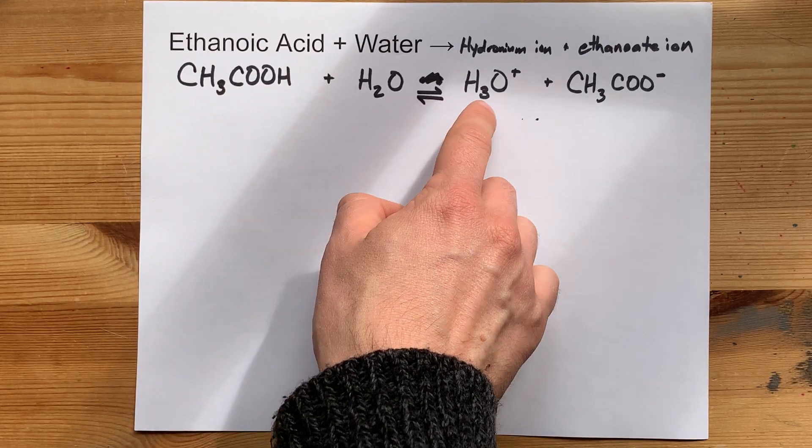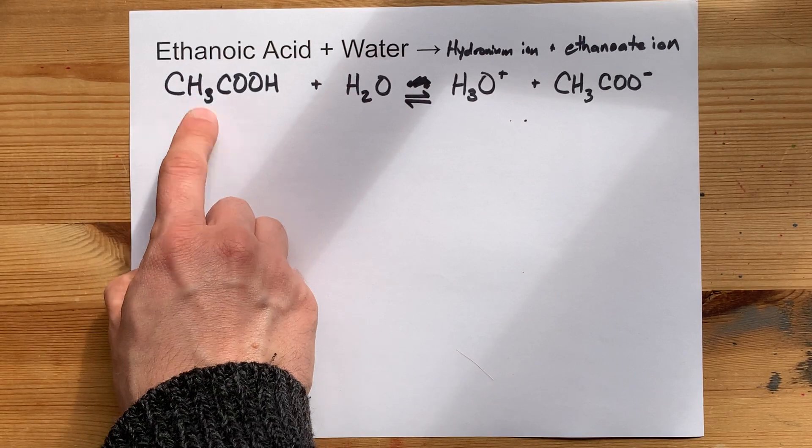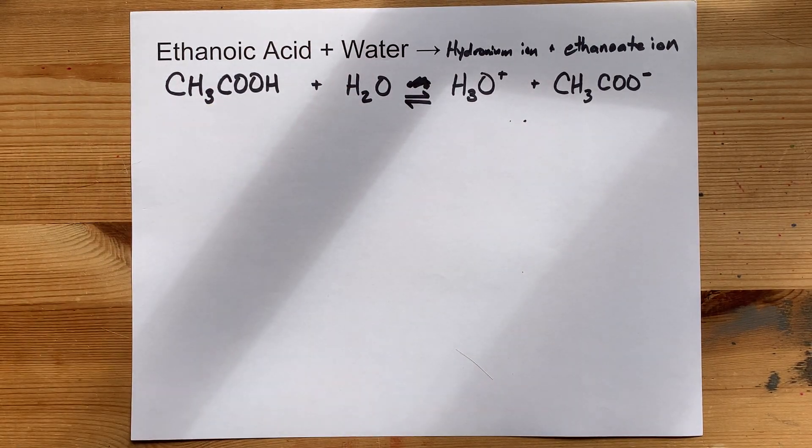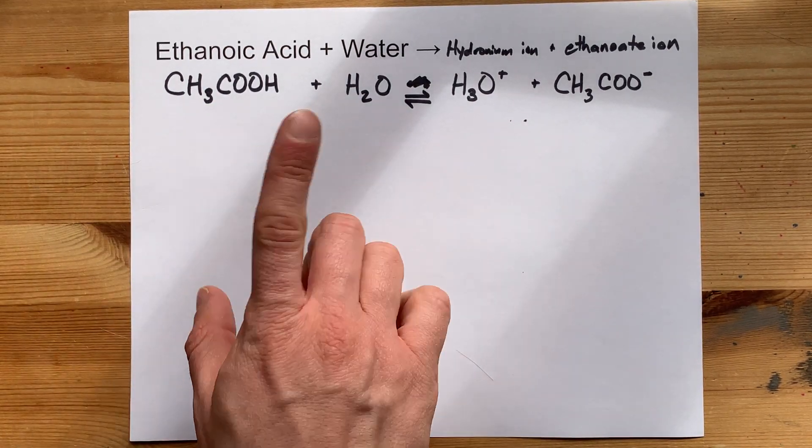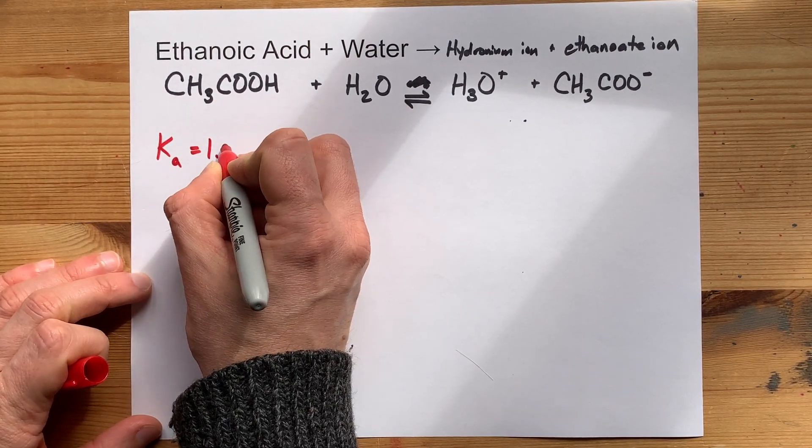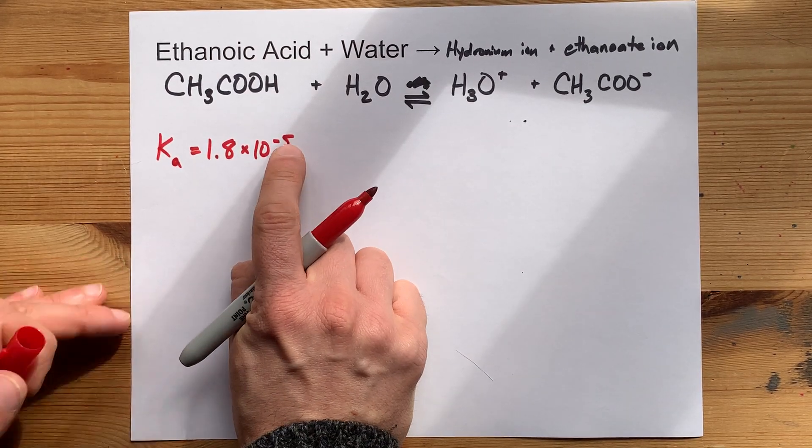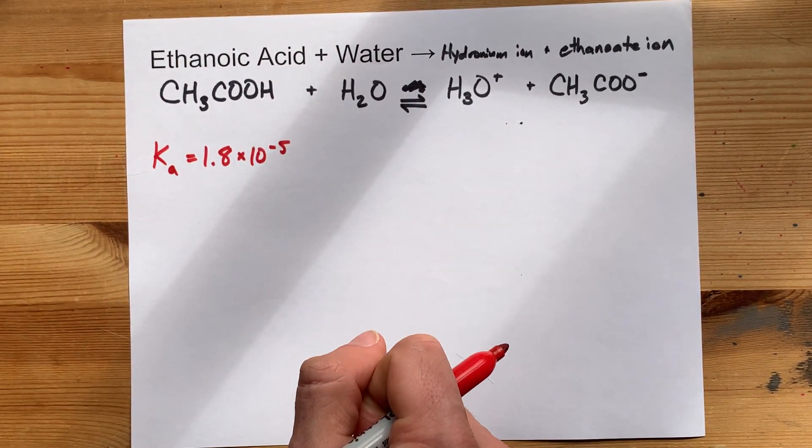the percent completion of this reaction is actually close to 1%. It depends on the concentration of this that you put in. And if you know anything about Ka, you'd be able to calculate it. The Ka here is a very small number times 10 to the negative 5. That's why we call it a weak acid.